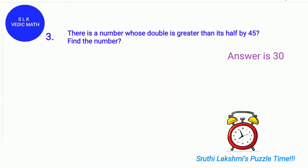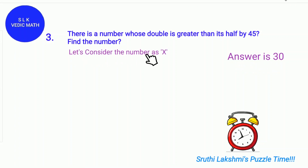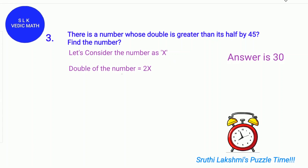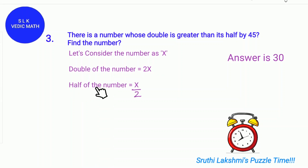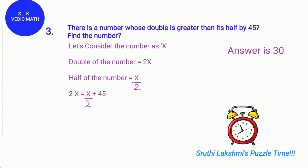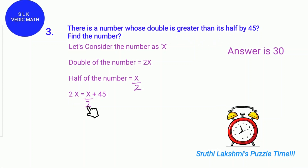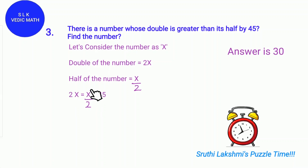The answer is 30. Let's consider the number as x. The double of the number is 2x. The half of the number is x divided by 2. There is a number whose double 2x is greater than its half x divided by 2 by 45, so plus 45. So it's 2x equals x divided by 2 plus 45.